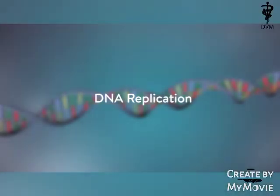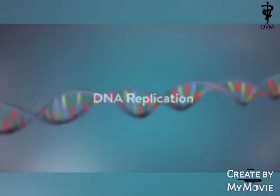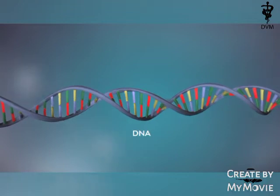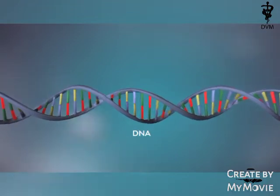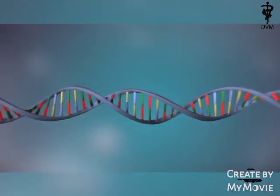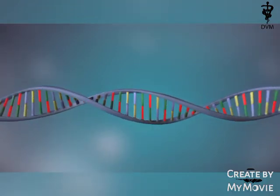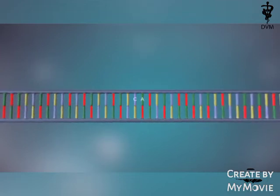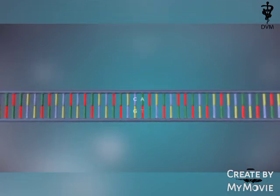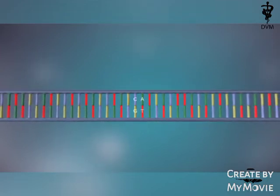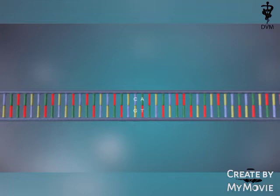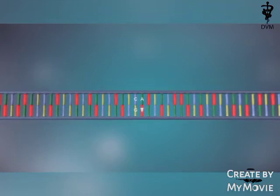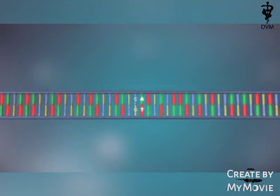Let's see a 3D show of DNA replication. A DNA molecule is made up of two strands twisted around each other in a double helix. Each strand is made up of a sequence of four chemical bases, represented by the letters A, C, G, and T.